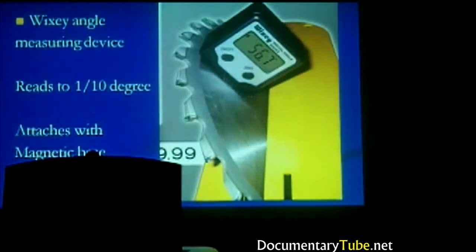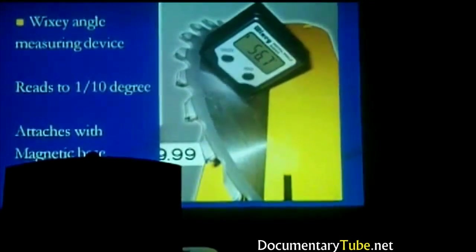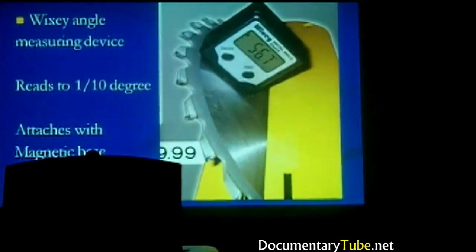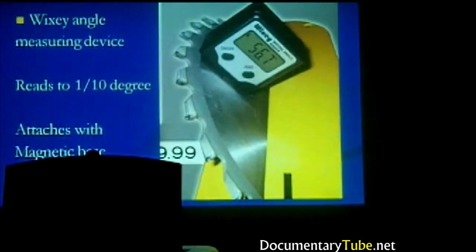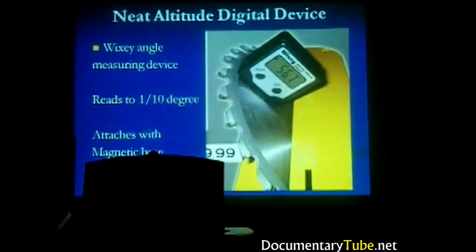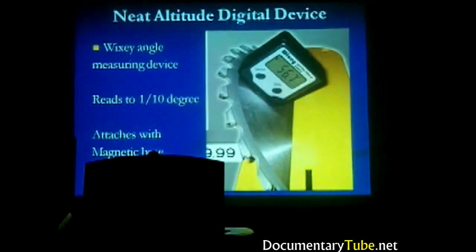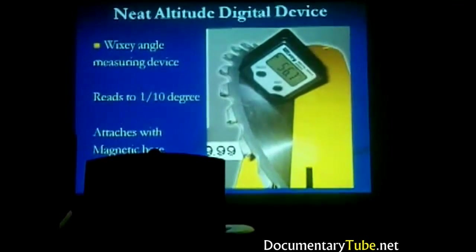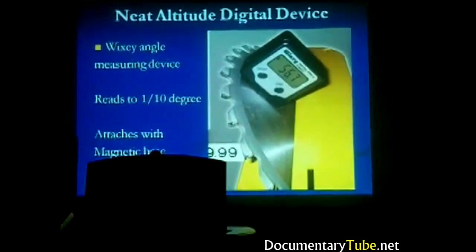They also make manual inclinometers — almost like a plumb line that hangs down with an angle indicator, like a protractor — but the resolution is not nearly as high as the digital ones. These digital inclinometers are available online or at Harbor Freight. One is called the Wixey — you can look that up on Amazon and buy it. Note that it's not backlit, since none of them are designed to be used in the dark, so you may want to clip on a small red LED light to illuminate it while observing.